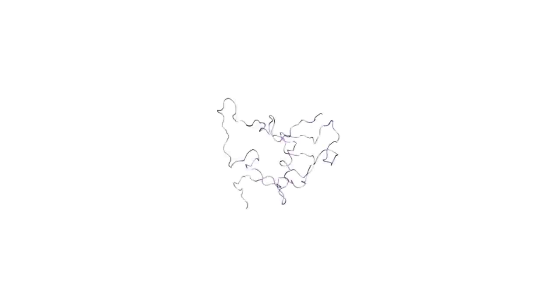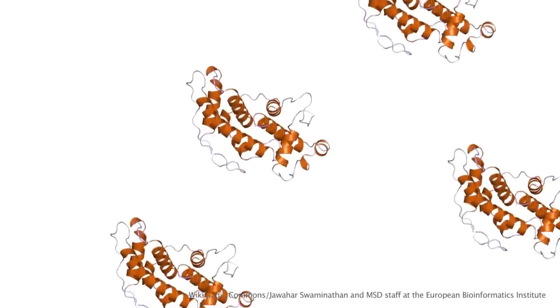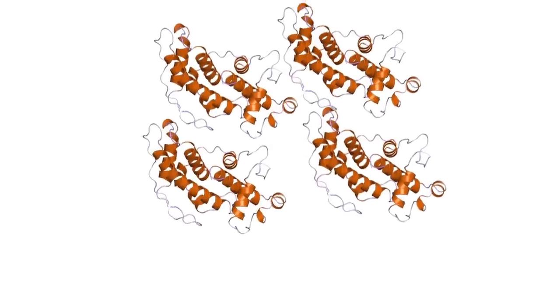Apparently, cells fold each alpha-synuclein monomer into a structure with neat coils, similar to the one pictured here. The cell then brings together four of these units in a package, or tetramer.